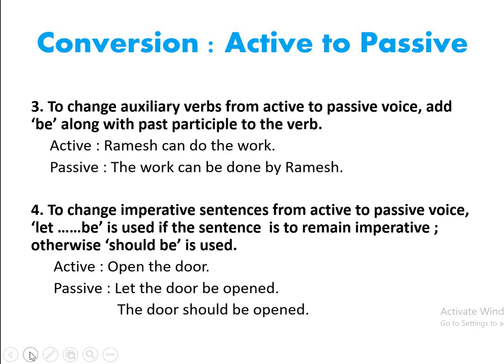Number four, to change imperative sentences from active to passive voice, 'let be' is used if the sentence is to remain imperative; otherwise 'should be' is used. For example, the active sentence is 'Open the door', which is an imperative sentence. The passive form can be 'Let the door be opened' or 'The door should be opened.' So in case of an imperative sentence, we use 'let be' or 'should be' in order to change from active to passive while maintaining the imperative sense.